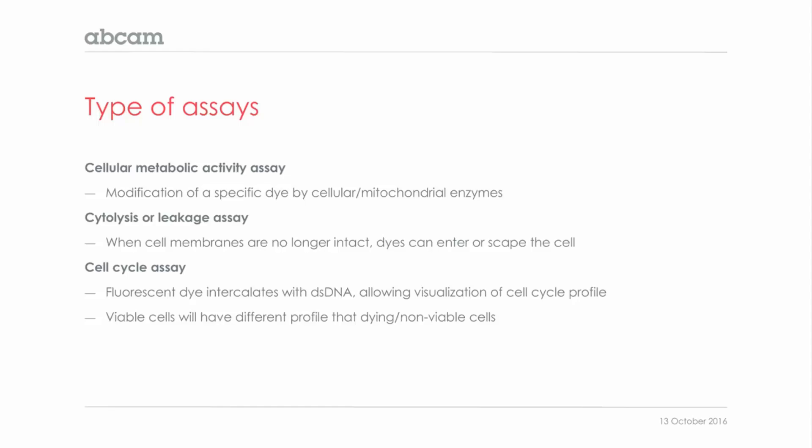Viability assays can roughly be divided into three types. First, the cellular metabolic activity assay, which is based on the modification — generally by reduction — of a specific dye by cellular or mitochondrial enzymes. Another type is the cytolysis or leakage assay, based on the fact that some dyes can only enter or escape cells when the membranes are no longer intact. A slightly different type is the cell cycle assay, which allows visualization of the cell cycle profile.